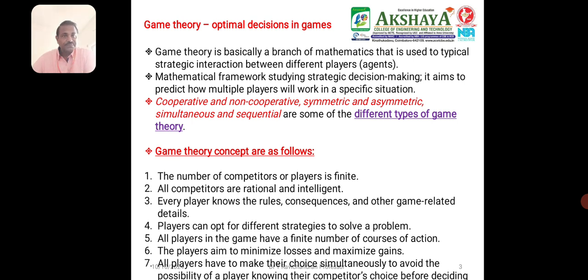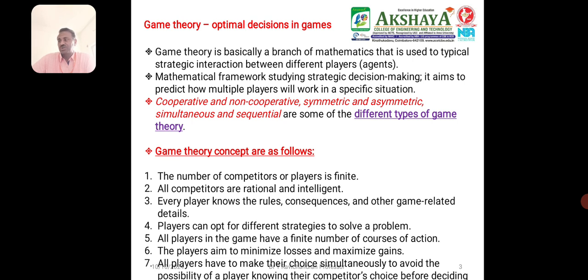In game theory, everyone knows the competitive environment. The two players know all the rules and regulations. The number of competitive players is finite. Similarly, the competitive environment involves adversarial search problems. With perfect information, the game is fully observable. In a zero-sum game, one player gains and another player loses, so that game is not a win-win game — that is called a zero-sum game.